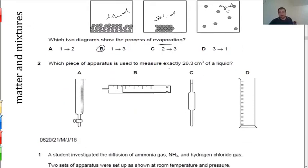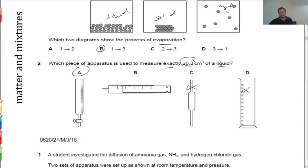Which piece of apparatus is used to measure exactly 26 cm³ of a liquid? To measure volume of liquid exactly, you use a measuring cylinder if approximate. Since the question says exactly, cancel the measuring cylinder. For accurate measurement use a pipette or a burette. Since 26 is not a multiple of 5, a pipette cannot be used — only a burette can be used. A gas syringe is for measuring gas.